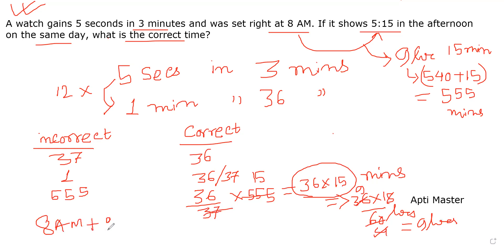9 hours from 8 AM. 8 AM plus 9 hours equals 5 PM. So the correct time should be 5 PM.